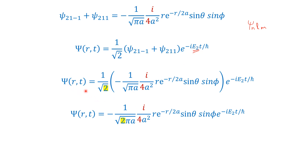So Ψ(r,t) equals 1/√2 times [minus 1 over √(πa) times i over 4a² times r e^(−r/2a) sin(θ) sin(φ)] times the time factor. Bringing the √2 inside, the prefactor becomes minus 1 over √(2πa). This is the simplified wave function as given in the problem.